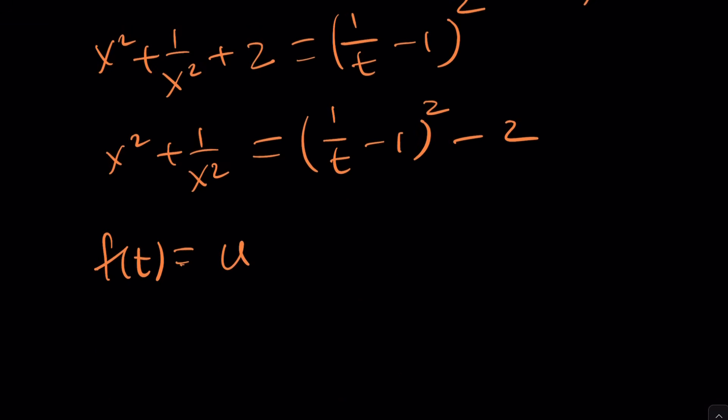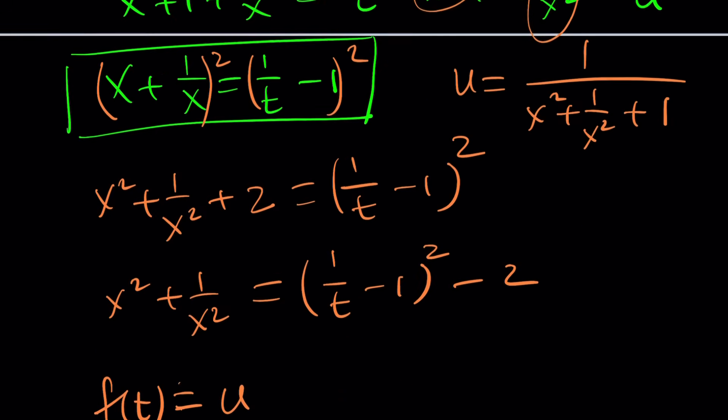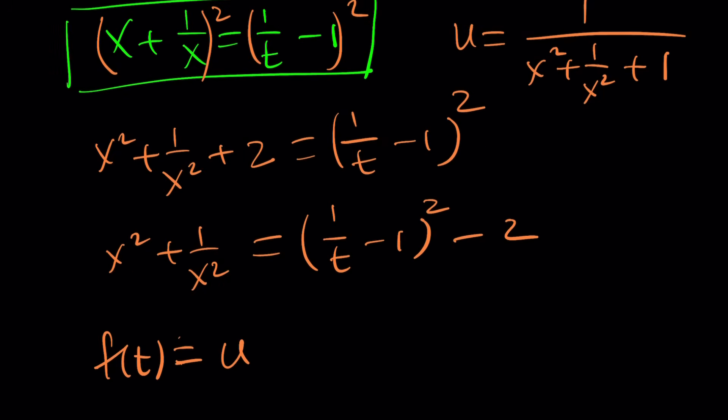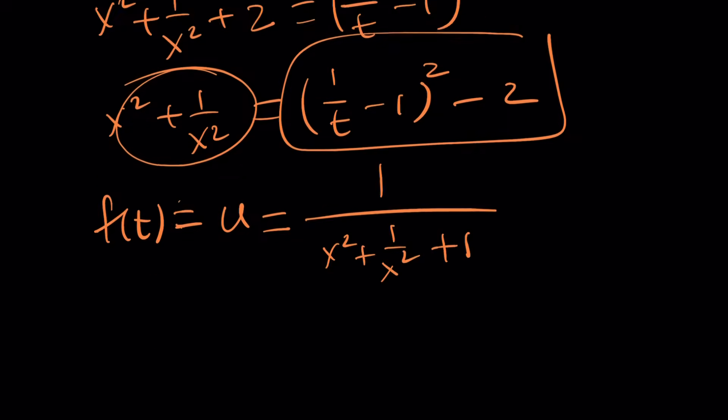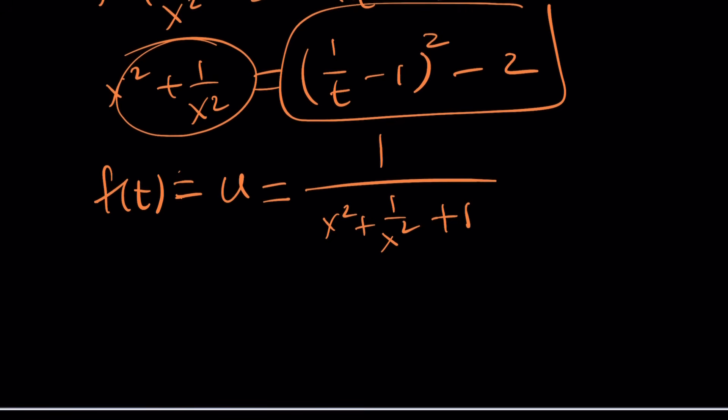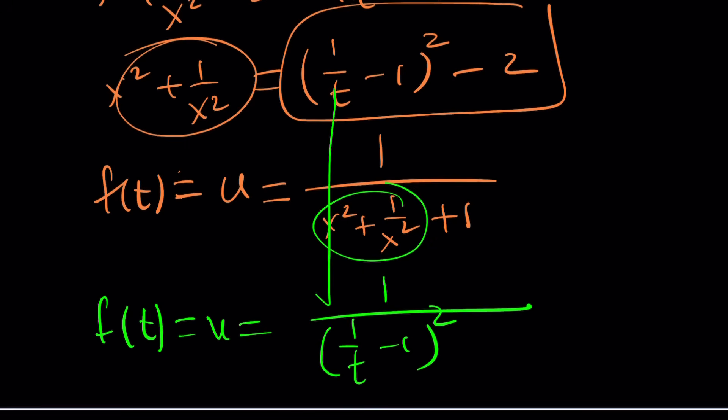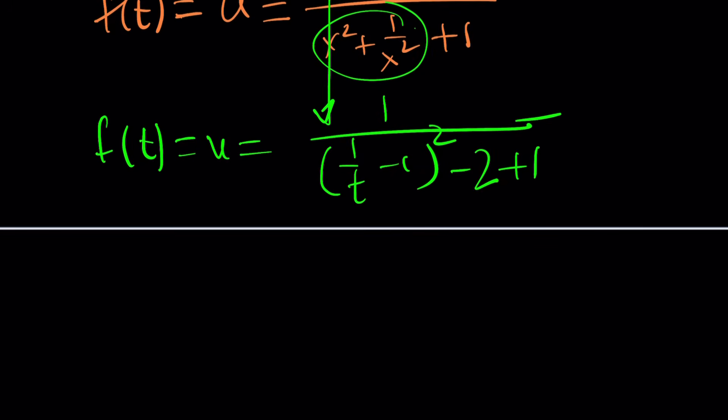So how do you associate t and u now? So let's go ahead and take a look. u is equal to this, right? 1 over x squared plus 1 over x squared plus 1. Well, we know that this is equal to that. So now I'm going to substitute that here. So f of t equals u equals 1 over, I'm going to now use the t term. This one from here. Minus 2, which replaces that, plus 1. Guess what? Forget about the u now. And you got f of t.